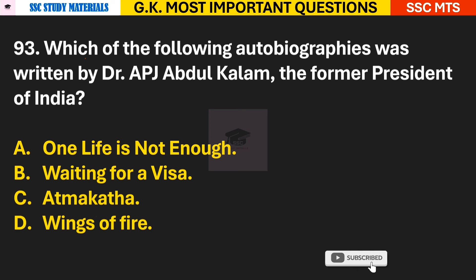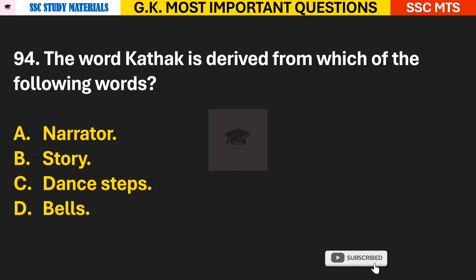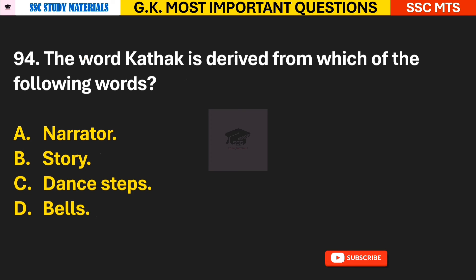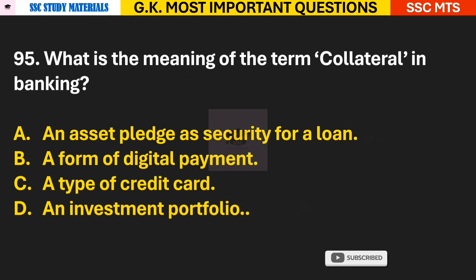Question 93: Which of the following autobiographies was written by Dr. A.P.J. Abdul Kalam, the former President of India? Answer D — 'Wings of Fire'. Question 94: The word 'Kathak' is derived from which of the following words? Answer B — it is derived from the word meaning 'story'.